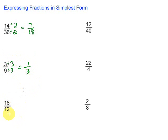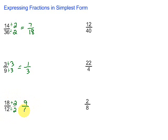Let's take a look at this one: 18 over 12. First of all, this is an improper fraction because the numerator, 18, is larger than the denominator. We'll get to that in a little bit. We can simplify first because they're both even, so we can divide by 2 for sure. Can we divide by anything larger? Well, 18 and 12 are both divisible by 3, and both divisible by 6. But we can just divide by 2 — we'll get there either way. Dividing top and bottom by 2: 18 divided by 2 is 9, over 12 divided by 2 is 6.